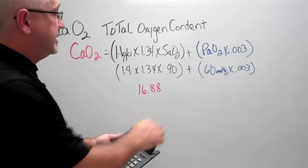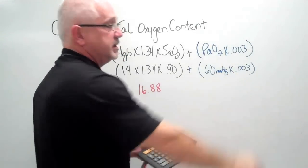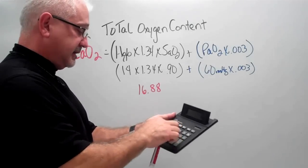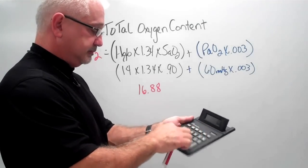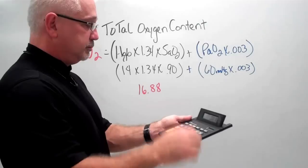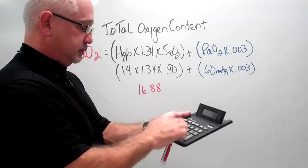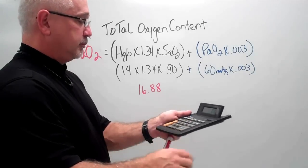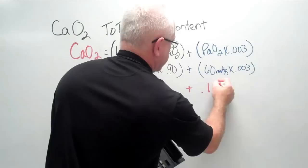Clear that. Now we're going to do the second part, 60 times 0.003. And now what we're calculating is the part that is dissolved in the plasma. And that equals 0.18.